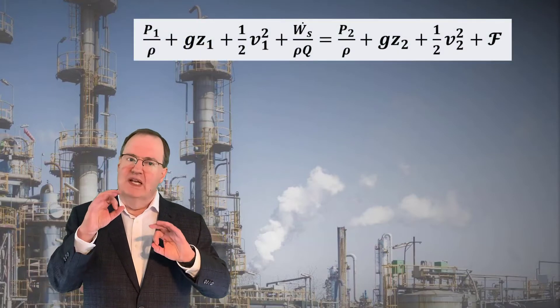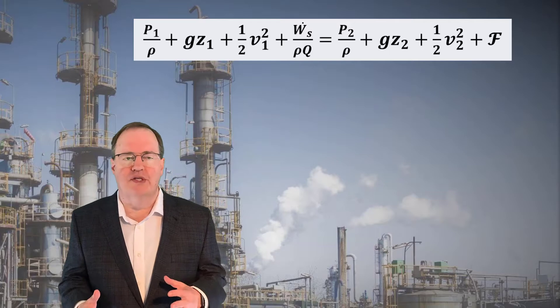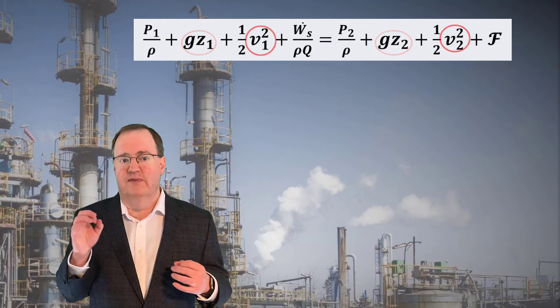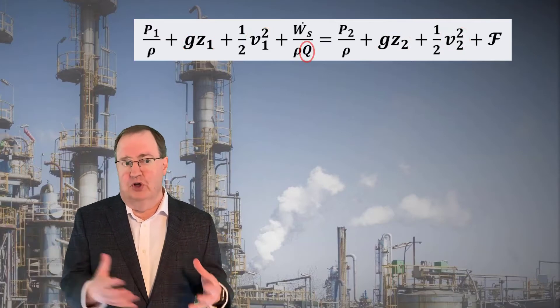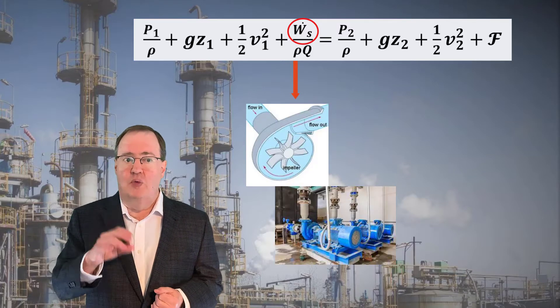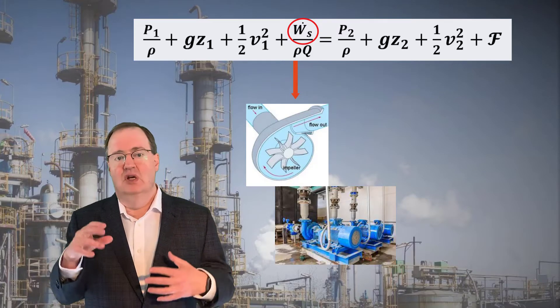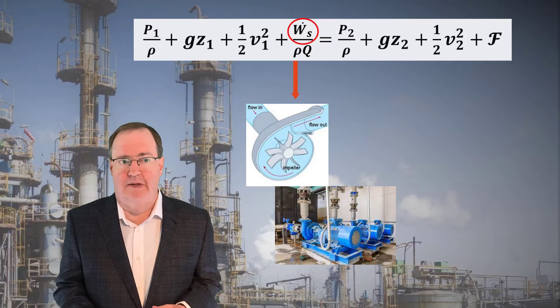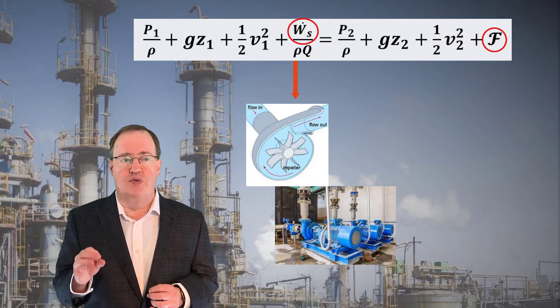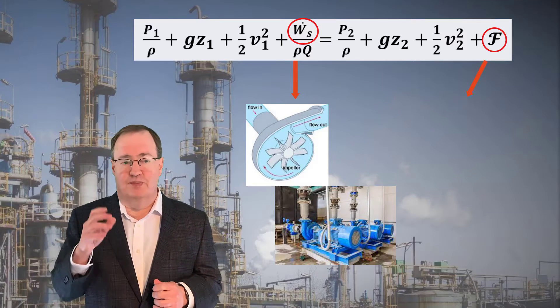Let's start with fluid flows. I'm assuming you've all had a class in fluid mechanics, where you learned of the many wonders of the Bernoulli equation, which is an energy balance between two points. P is pressure, rho is density, g is gravity, z elevation, v velocity, and q volumetric flow. W sub s is shaft work, which is how we can add energy with pumps, fans, or any kind of fluid impeller. The fancy f on the right is friction. We can increase the friction opposing fluid flow with valves that subtract energy.